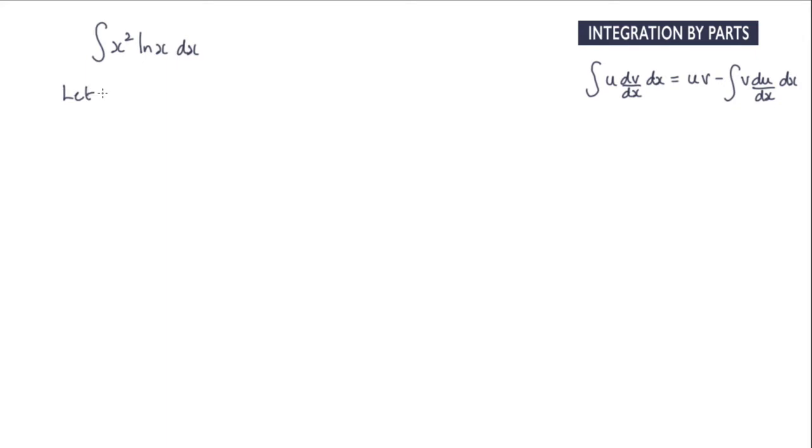The first step is to decide which part we're going to be making equal to u and which part will be dv by dx. So we've got this x squared term and we've also got log x. Now most people would actually choose x squared for the u because when we differentiate that it's nice and easy, we get 2x.